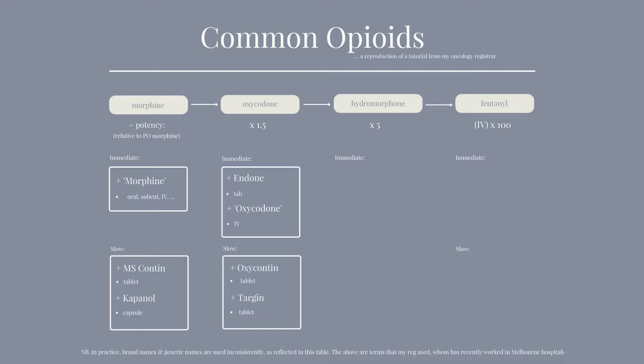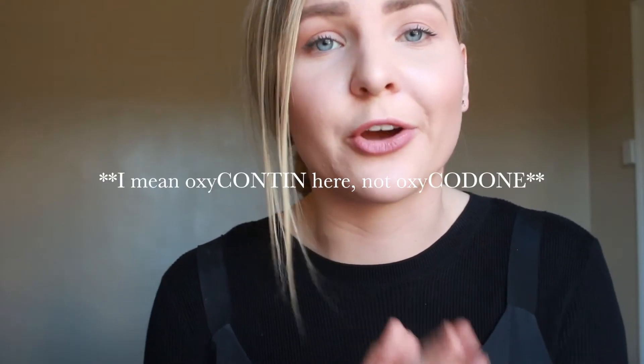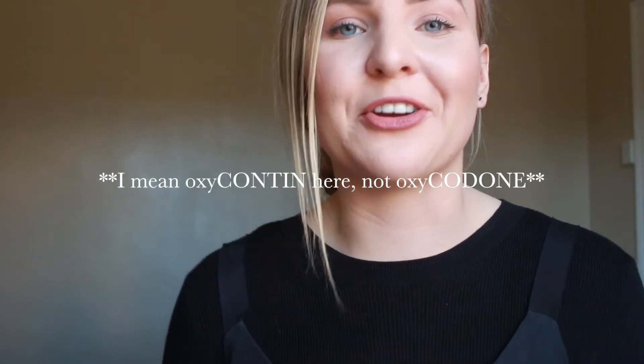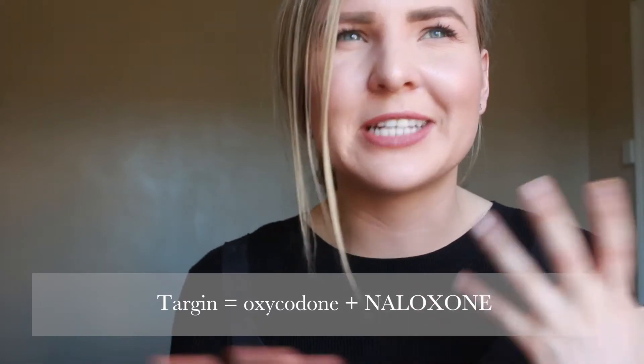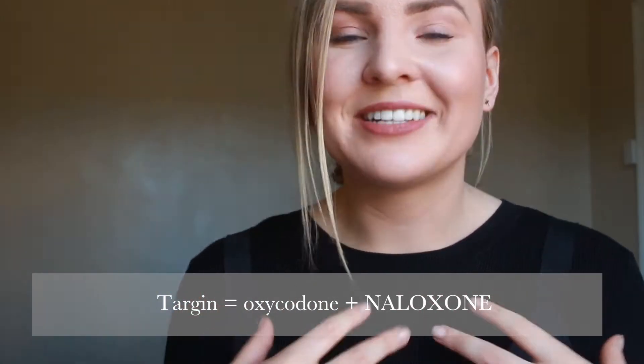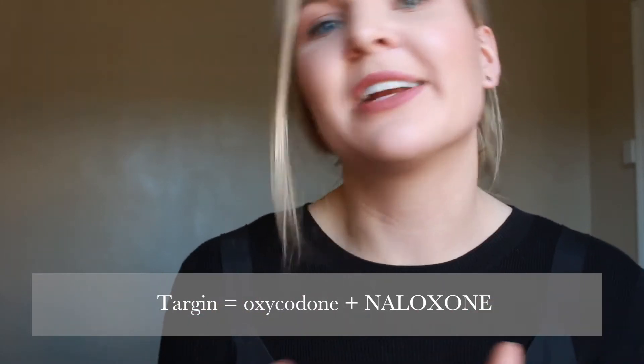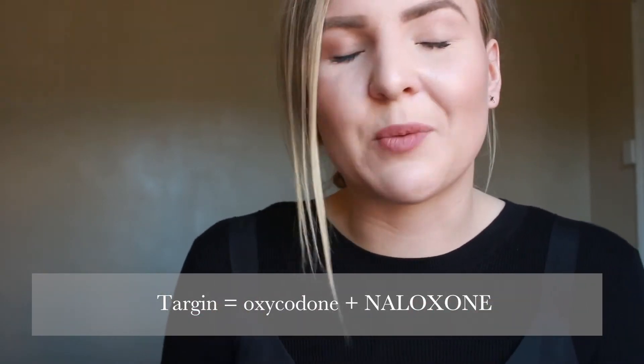Slow release versions of oxycodone include OxyContin in tablet form, and also Targin. Targin has basically taken over the place of oxycodone now. Targin is different because it contains a second active ingredient: naloxone. Naloxone is actually an antagonist to opioid receptors. There are opioid receptors in the gut, and one complication of taking opioids is constipation. Naloxone's job in Targin is to block those gut opioid receptors so that opioids can't bind to them, giving less constipation.